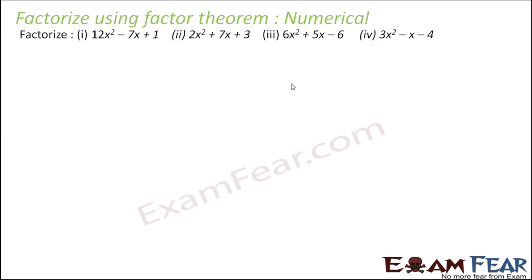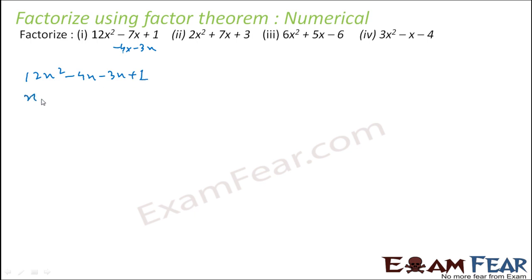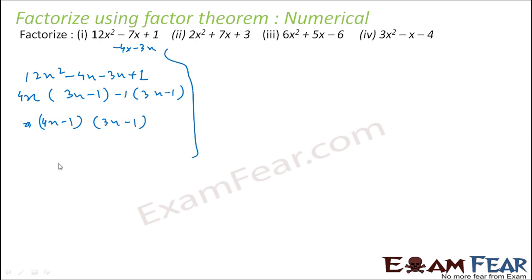We have to factorize these using the split method. For the first, split minus 7 such that the product is 12: split into minus 4x and minus 3x, since minus 4 into minus 3 is plus 12. This becomes 12x square minus 4x minus 3x plus 1; taking 4x common gives (3x minus 1), and minus 1 common gives (3x minus 1). So the factorization is (4x minus 1)(3x minus 1).